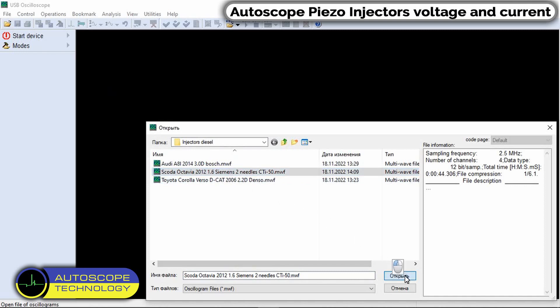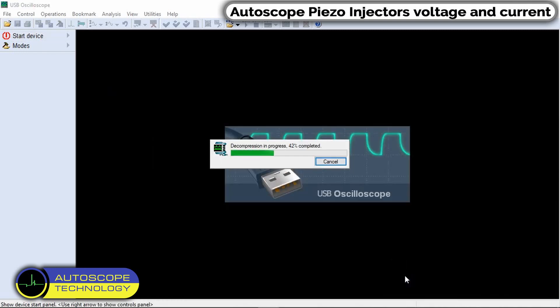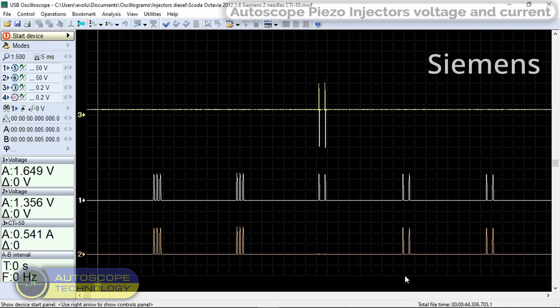Here is an example of a recorded injector control signal for a Škoda Octavia. Siemens diesel piezo-injectors are installed here.